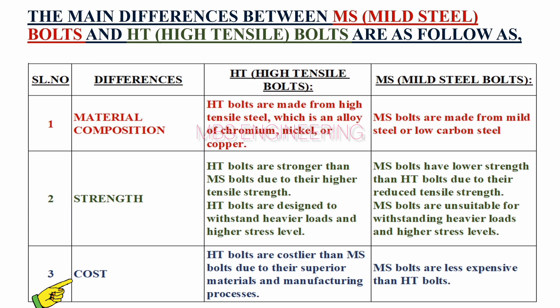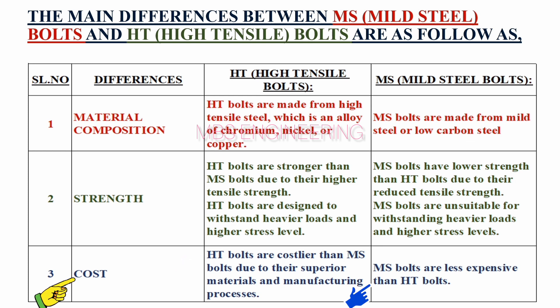Third point: we will consider the cost of the materials. HT bolts are costlier than MS bolts due to their superior materials and manufacturing processes. MS bolts are less expensive than HT bolts.